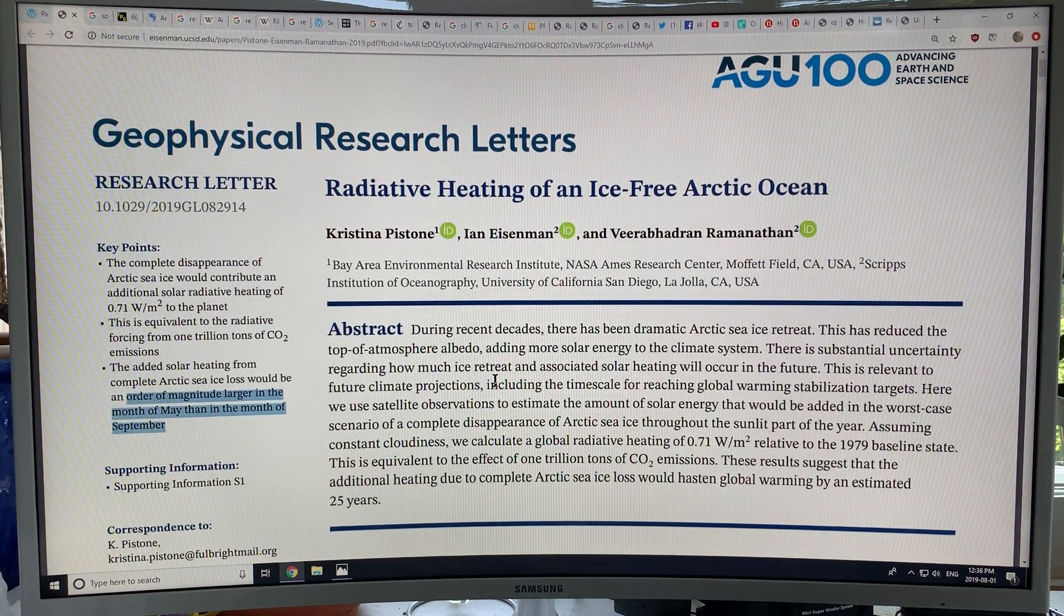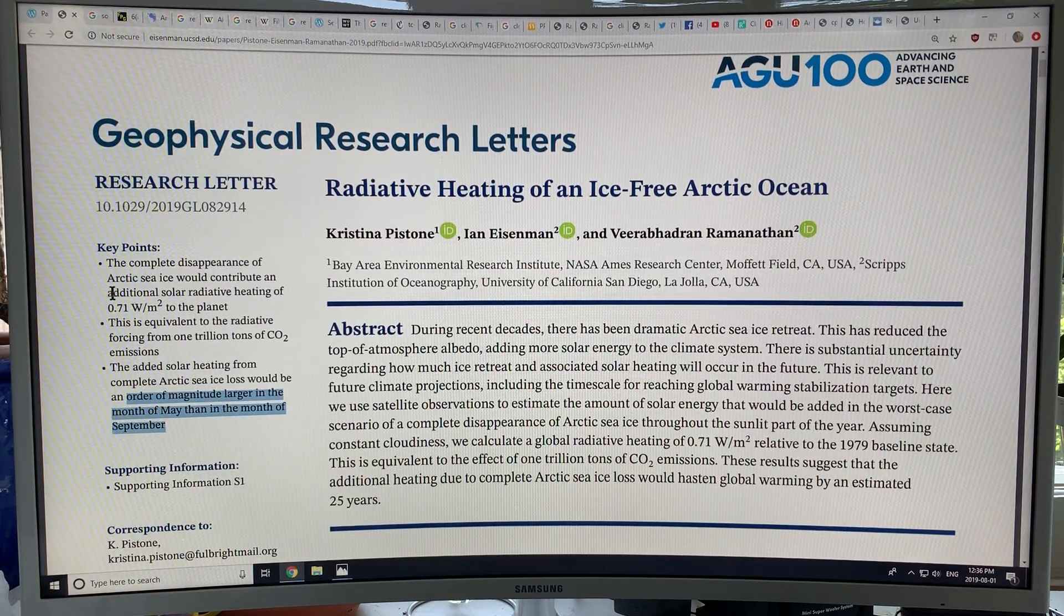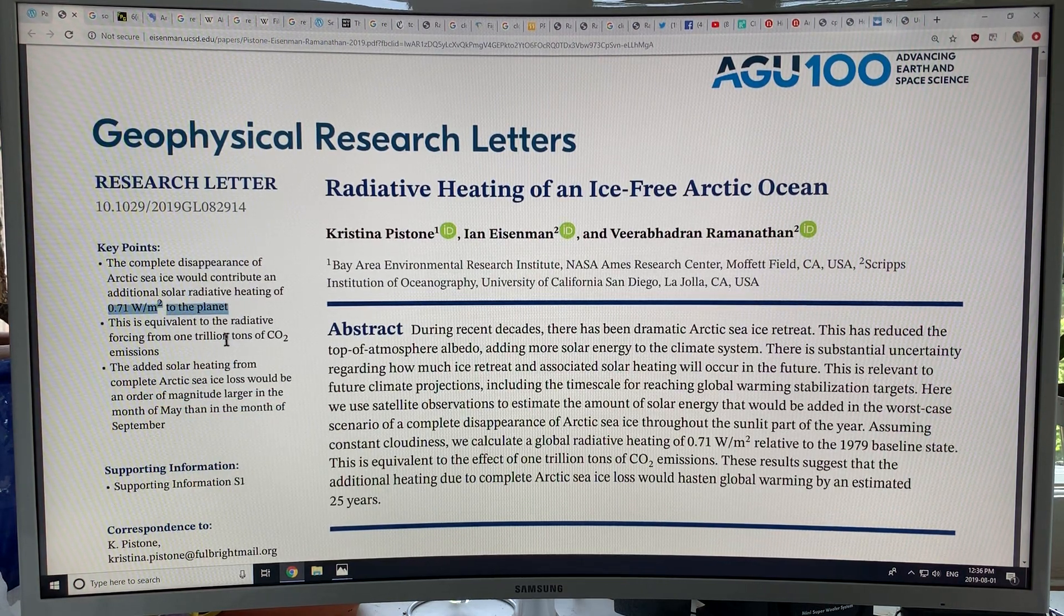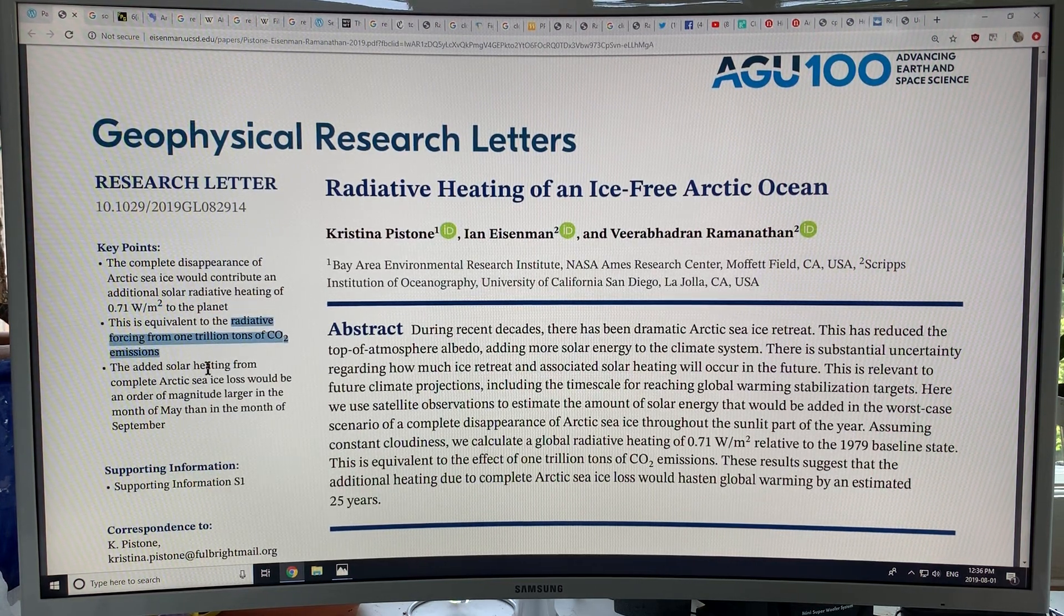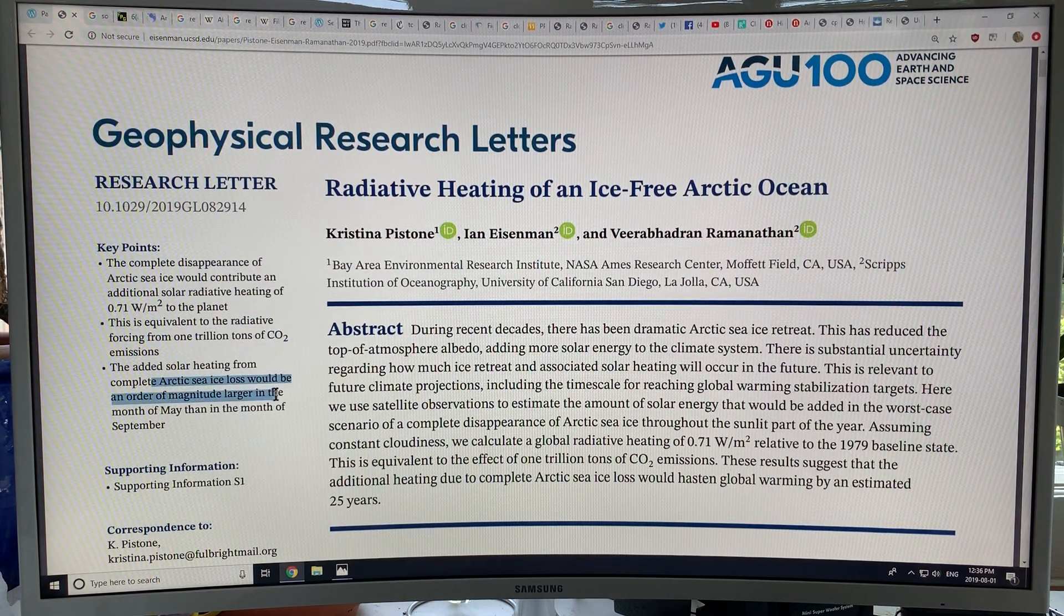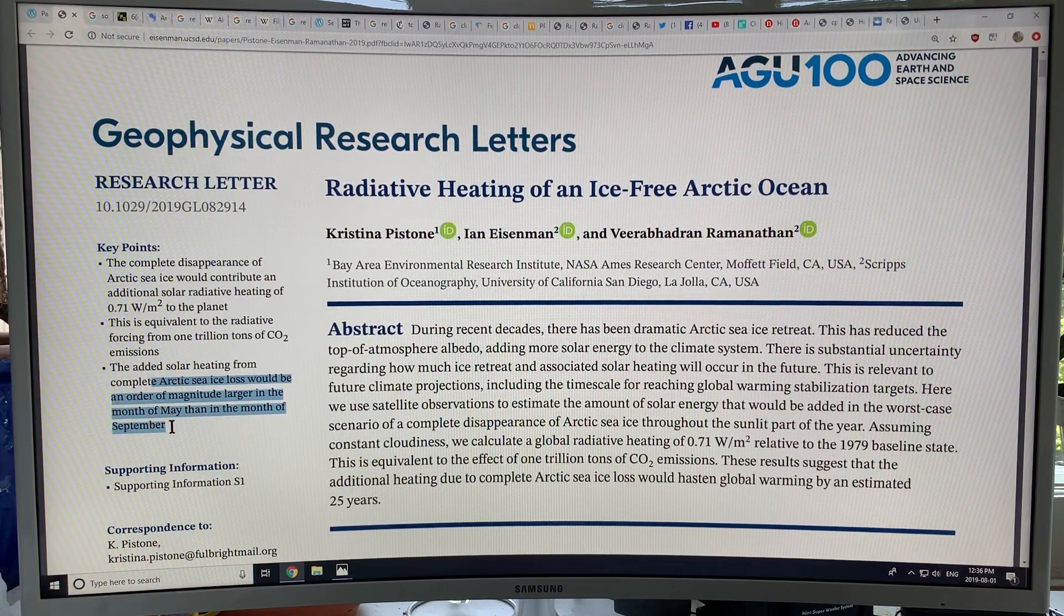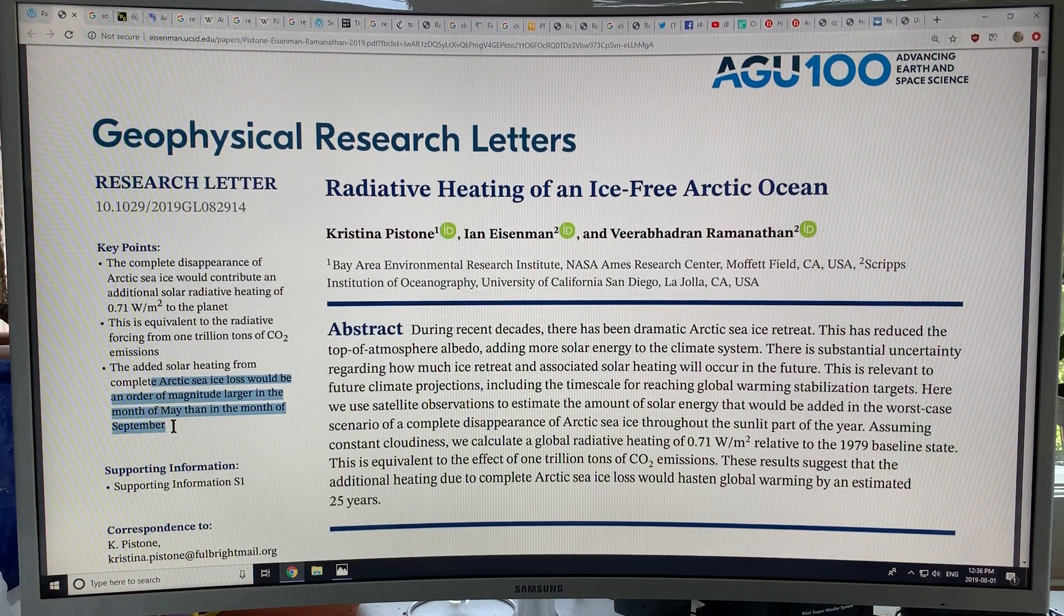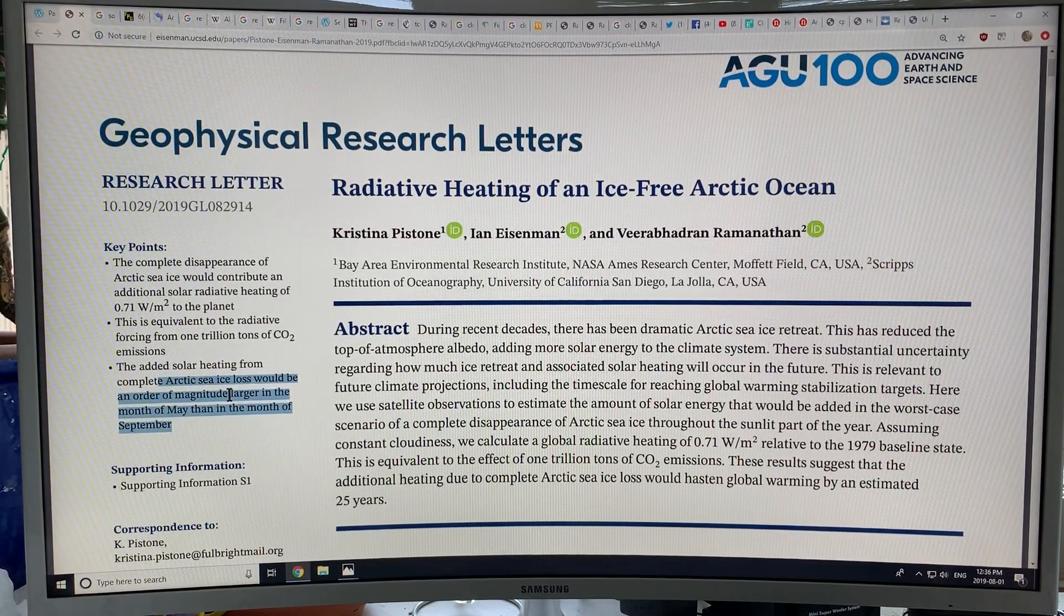So a couple of the key things, key points. The complete disappearance of Arctic sea ice would contribute an additional solar radiative heating of 0.71 watts per meter squared to the planet. This is equivalent to the radiative forcing from 1 trillion tons of CO2 emissions. The added solar heating from complete Arctic sea ice loss would be an order of magnitude larger in the month of May than in the month of September.